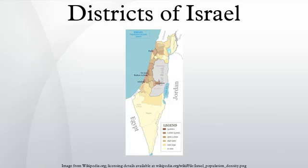Southern district: population 1,168,600; district capital: Beersheba. Sub-districts — Ashkelon: population 504,200; Beersheba: population 664,400. Formerly, Haifa's Regional Council with a population of around 10,000 Israeli settlers was part of this district, but the settlements that constituted it were evacuated when the disengagement plan was implemented in the Gaza Strip.